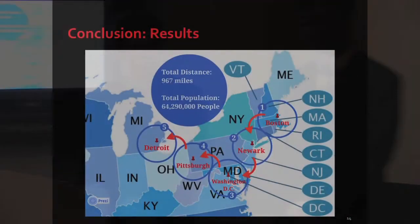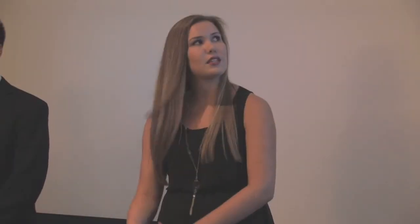For the final route, the government will start at Boston, Massachusetts, then travel to Newark, New Jersey. After that, they'll go to Washington D.C., then travel northwest to Pittsburgh, Pennsylvania, and Detroit, Michigan. This route is 967 miles, and it will save 64,290,000 people.